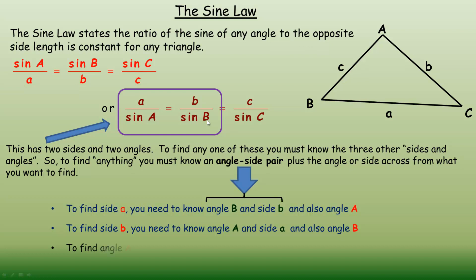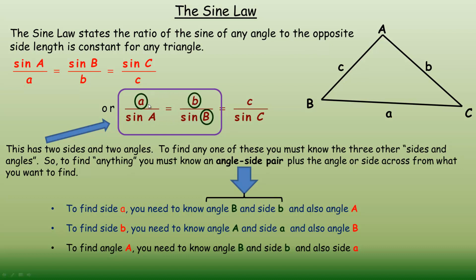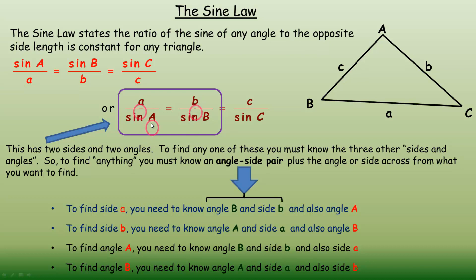When finding angles: to find angle A you'd need the angle-side pair of side B and angle B, plus you'd need to know side A. And to find angle B, you'd need angle A and side A as the angle-side pair, plus side B. There are always four things and you always need to know the other three. The same idea applies when using pairs A and C, or B and C.